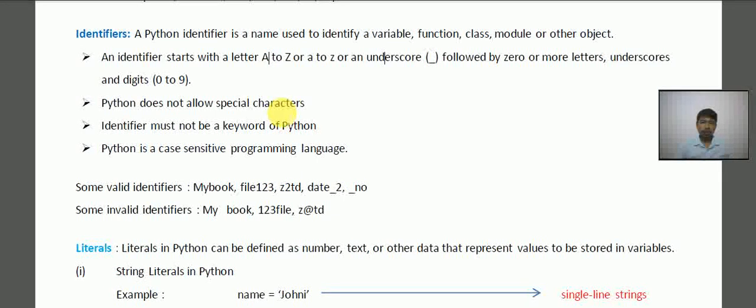so it will not allow the special characters except this underscore. So the other characters like at the rate, hash, so these things are excluded from it. Next, identifier must not be a keyword. The rule for identifier is that it must not be a keyword.